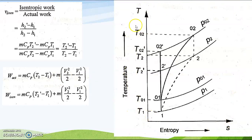Study this T-S diagram in detail — each and every component and the relations between them. We have the actual work from 1 to 2, the velocity rise from point 1 to point 01, the velocity rise from point 2 to point 02, and from point 2-dash to point 02-dash. P01 and P1 are the pressure difference created due to inlet velocity; P2 and P02 are the difference created due to outlet velocity. Study this T-S diagram and the required equations for working out problems related to centrifugal compressors. The weightage for problems in the fifth and sixth module is less, but we should still concentrate on the problem-solving side as they will have straightforward problems. Thank you.